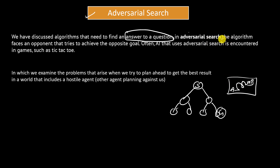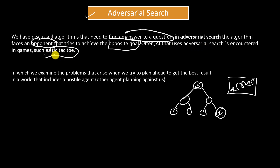In the case of adversarial search, the algorithm faces an opponent that tries to achieve the opposite goal. Often AI that uses adversarial search is encountered in games such as tic-tac-toe. We are taking the example of tic-tac-toe because a lot of research has been done on this particular game. In adversarial search, we examine the problems that arise when we try to plan ahead to get the best result in a world that includes a hostile agent — another agent planning against us.